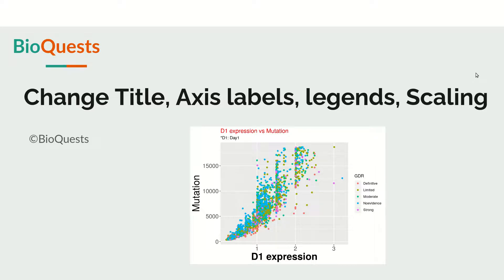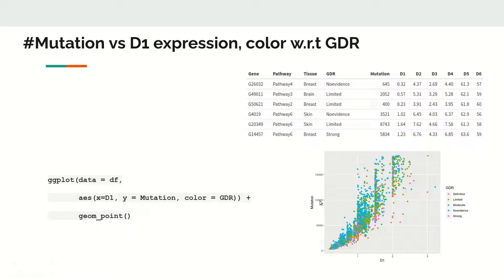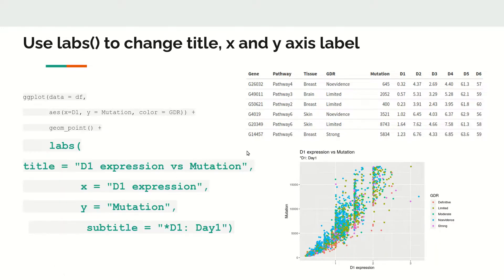In this video we will explore how to change different plot properties like the x and y labels, the title, and how to increase the fonts. This is the plot we will be using, which we have seen in the last videos. If we want to change the title, axis labels, x axis label, y axis label, the title and subtitle, we can use the labs function.